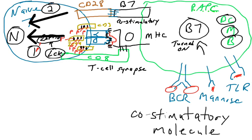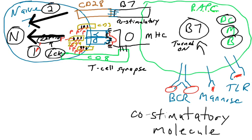Now that the professional antigen-presenting cell has had these interactions with the naive T-cell, the T-cell transitions from a naive state to an activated state. The activated T-cell will proliferate and carry out its effector function — whether it's a CD4 or CD8 cell, it will have a different effector function. This entire process of a naive T-cell becoming an activated T-cell takes place in the lymph nodes or other lymphatic tissues.